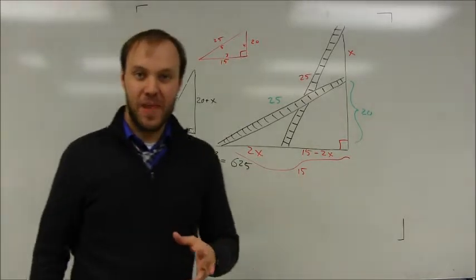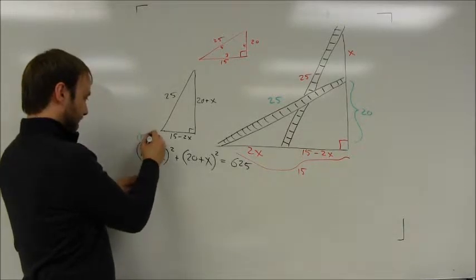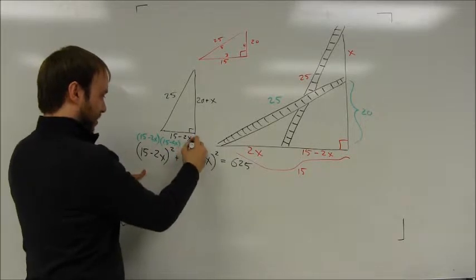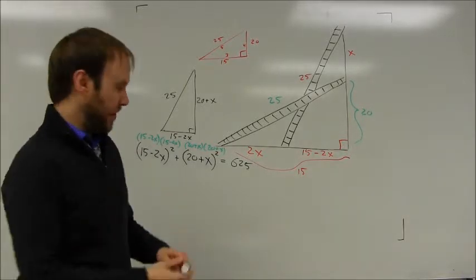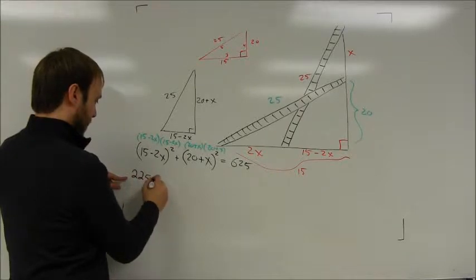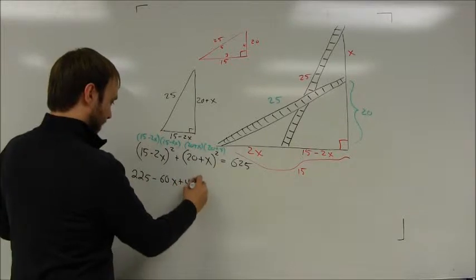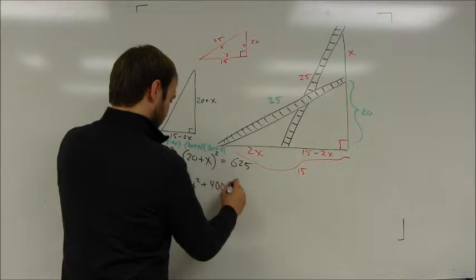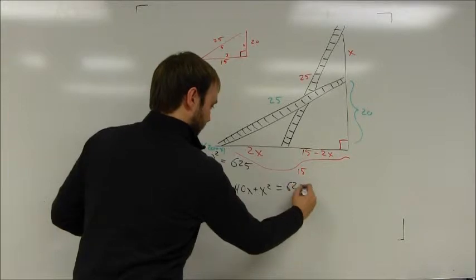Now I have to be real careful here. I've got double FOIL problems here. This is the quantity 15 minus 2x times the quantity 15 minus 2x. This is the quantity 20 plus x times the quantity 20 plus x. And so I have to very carefully FOIL these out. In this case it's going to be 225 minus 60x plus 4x². The second one is going to be plus 400 plus 40x plus x² and the whole thing equals 625.